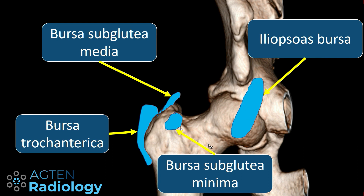We also have two smaller bursae — the subglutea media and subglutea minima bursae below the corresponding tendons — and on the lateral aspect over the greater trochanter we have the bursa trochanterica, or the greater trochanteric bursa.